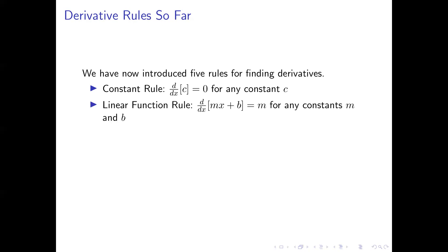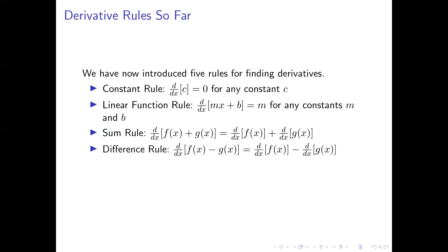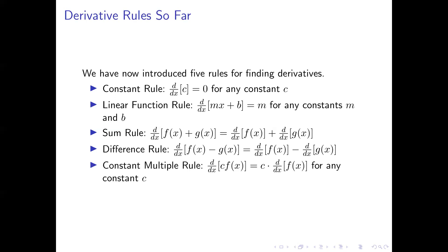We have what we call the linear function rule, which says, in effect, that the derivative of any linear function is the slope of the line. If we have mx plus b and we're taking the derivative of it with respect to x, where m and b are constants, the derivative is equal to m. We have the sum rule, which says that the derivative of a sum function is the sum of the derivatives of the parts. We have the very similar difference rule, which says that the derivative of a difference function is the difference of the derivatives of the parts. And finally, we have the constant multiple rule, which says that if we're taking the derivative of c times f of x, where c is a constant, we can take the derivative of f of x and multiply that derivative by c.